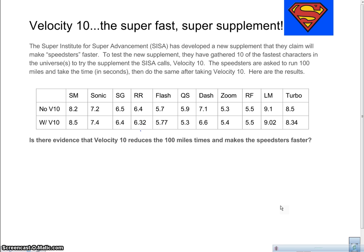So with no Velocity 10, we have Superman, Sonic, Speedy Gonzales, and we have the Roadrunner, Flash, Quicksilver, Dash, Zoom, Rainbow Flash, and Lightning McQueen and Turbo. And so they all take the supplement, they've run 100 miles and this is how fast they ran in seconds.